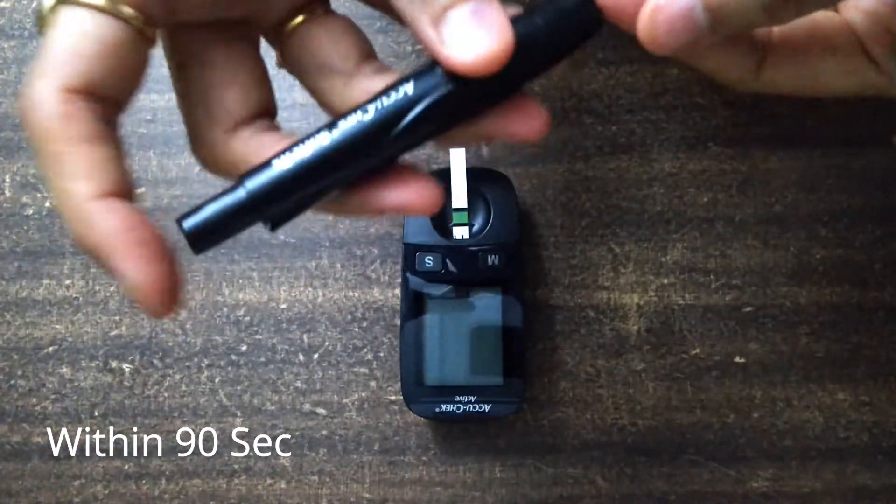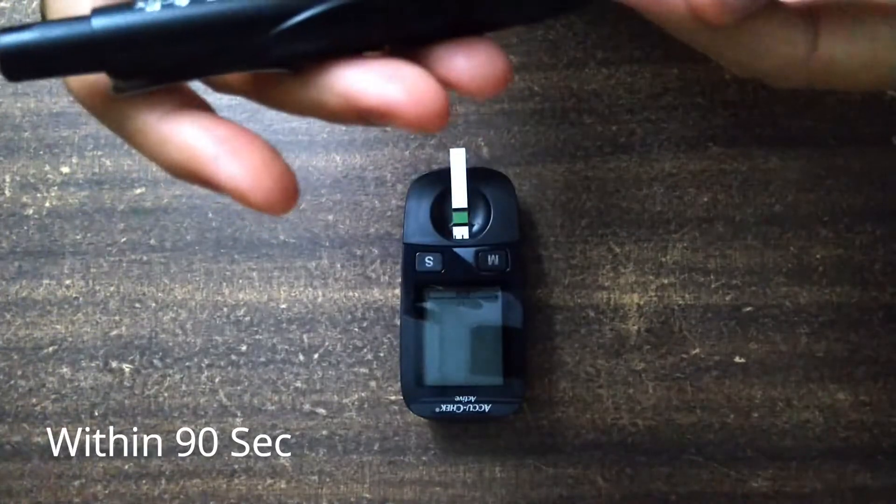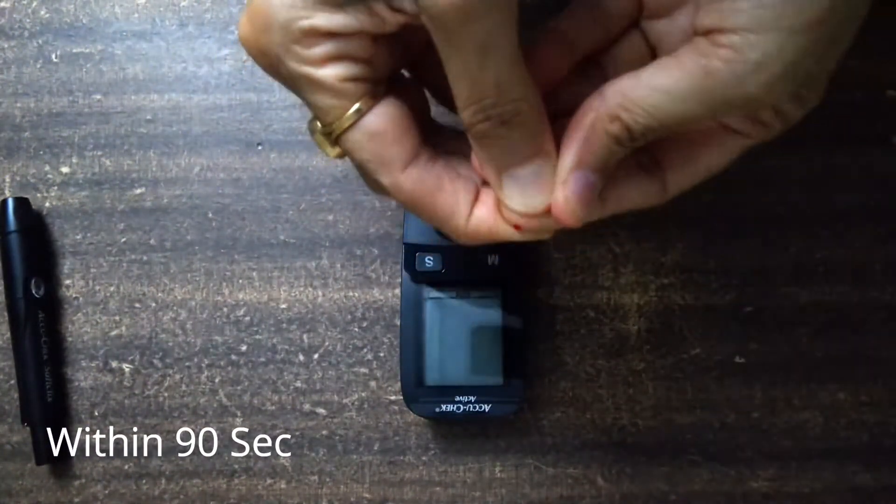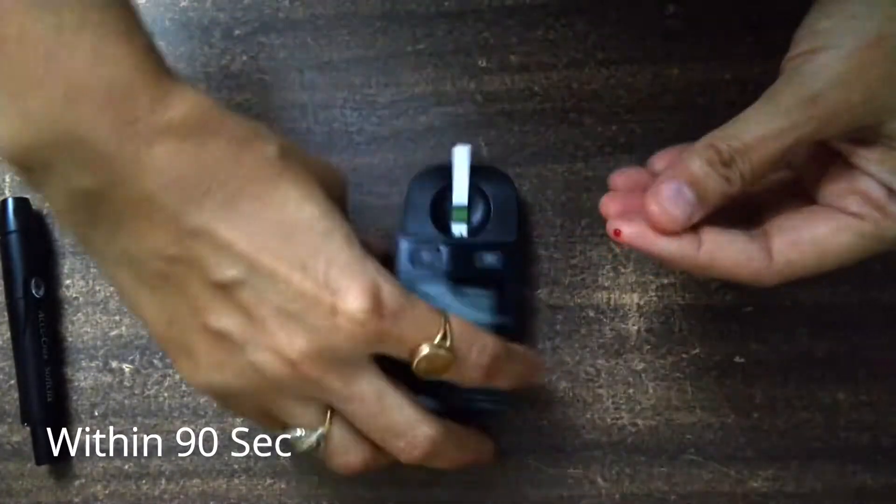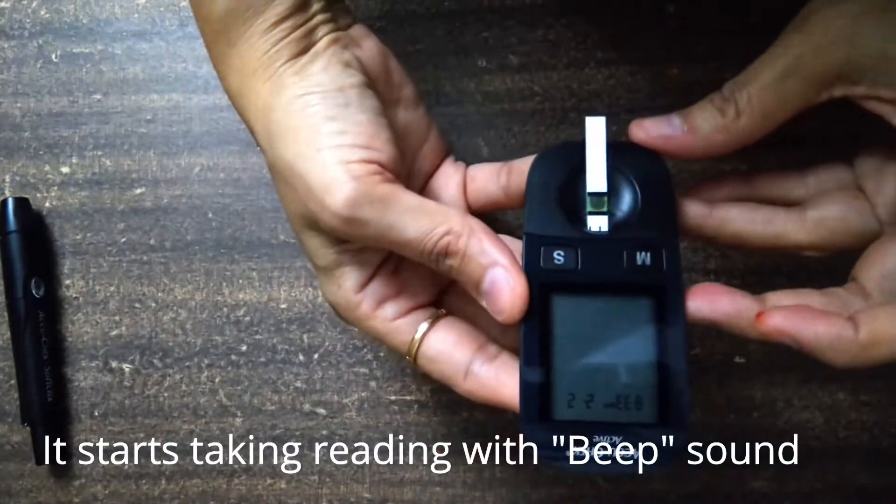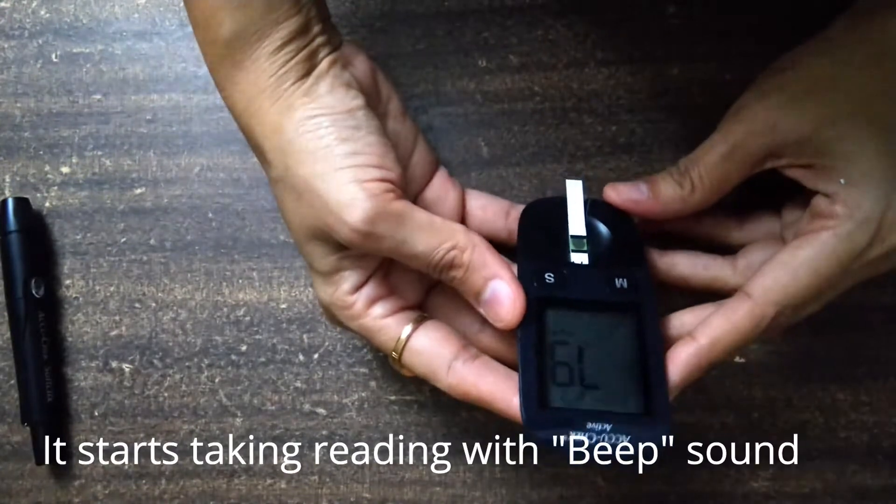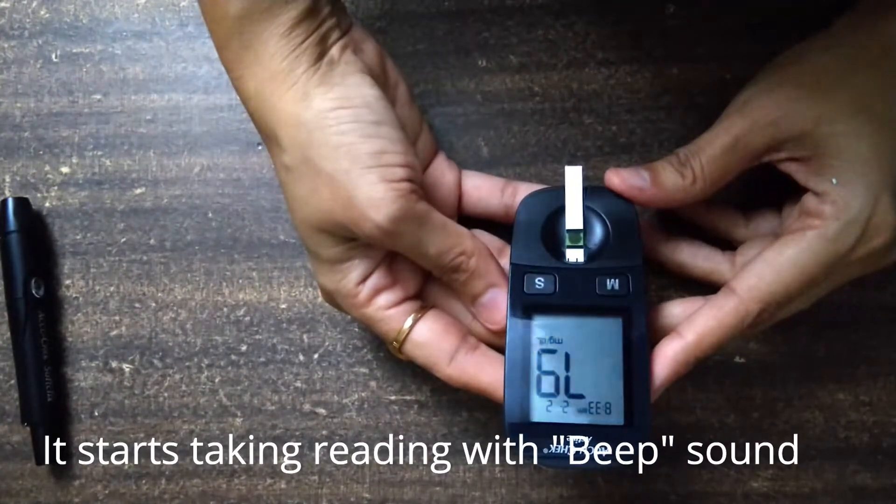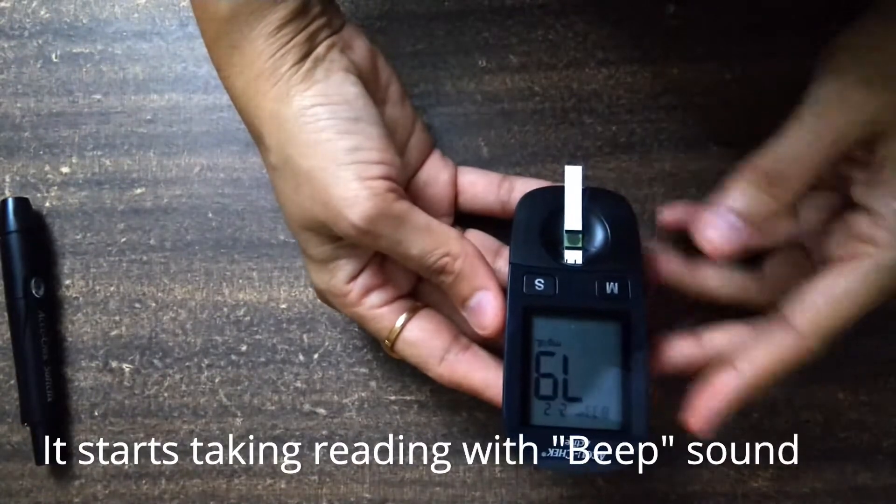Now I will just press it. This is my blood. Now I will add it to my blood. Now my blood level is 79, so it is giving the accurate reading.